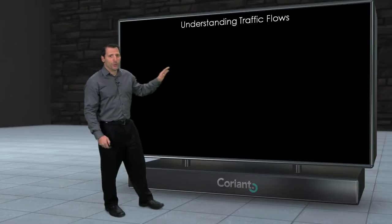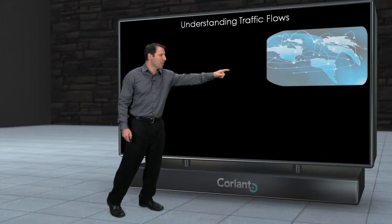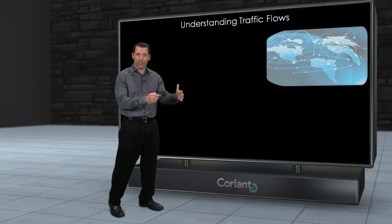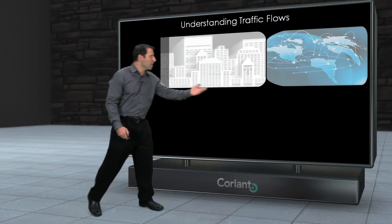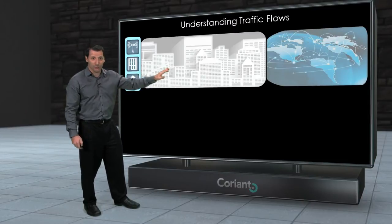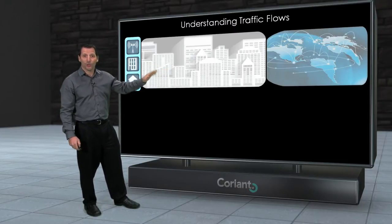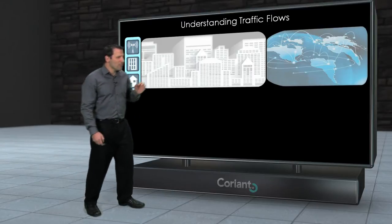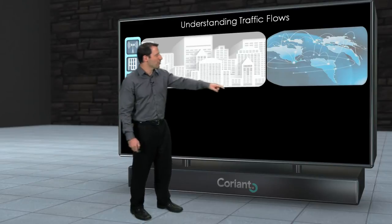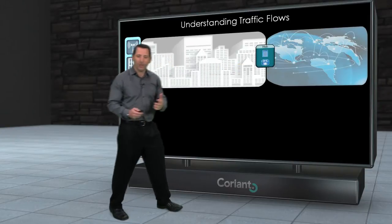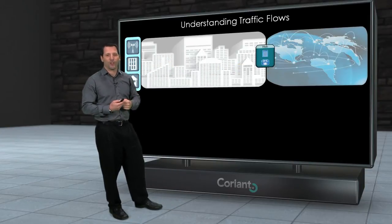You can take a transport network and really break it into two halves. You have the long haul network that interconnects these large hub locations — these major metropolitan cities from one another. And you have the metro network, the network that connects the subscriber to the service provider and where the service provider does most of their traffic management for those subscribers. It's nice to break the network up like this because there's a clear delineation point between these two halves, where service providers build these big hub locations to do all of their traffic management.